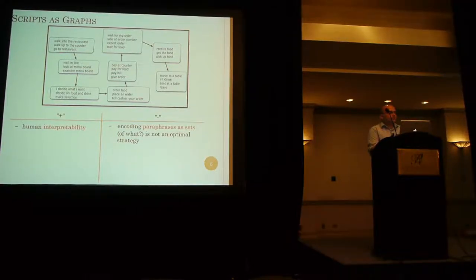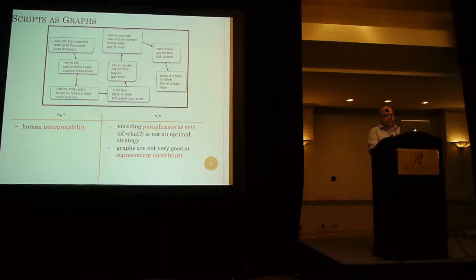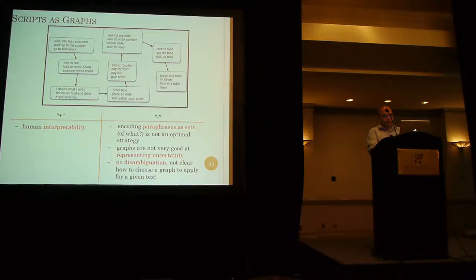Representing scripts as graphs seems attractive but it has its own disadvantages. For example, the granularity of the node needs to be decided by the model designer — what should go into the node: the predicate, the argument, or both. Then it's not so easy to assign some kind of confidence score to the event ordering, and it's not entirely clear how to choose a graph to apply to a given text.